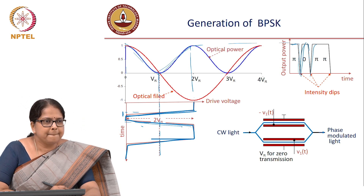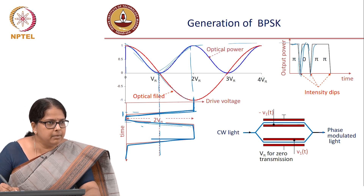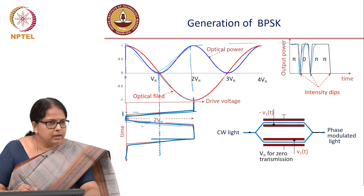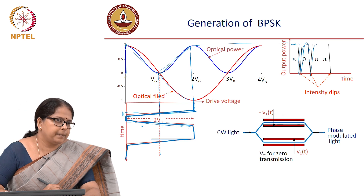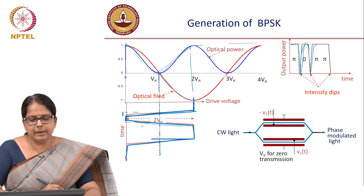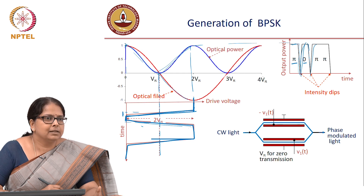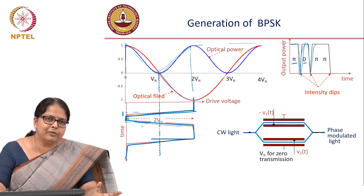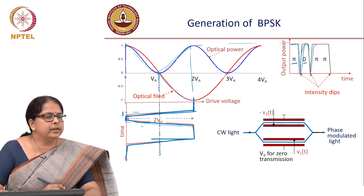But what about the phase? When your input is high, in terms of the electric field you are at the minimum — power is high but the field is negative. When your input is low, again power is high but the field is positive. So in terms of the field, you are flipping between minus E and plus E, which means in terms of the phase of the output you are flipping between π and 0. And what is this modulation? It is BPSK. You just biased the modulator at the null point and applied a swing of 2Vπ rather than Vπ, converting an intensity modulator into a phase modulator by simply changing the operating condition.